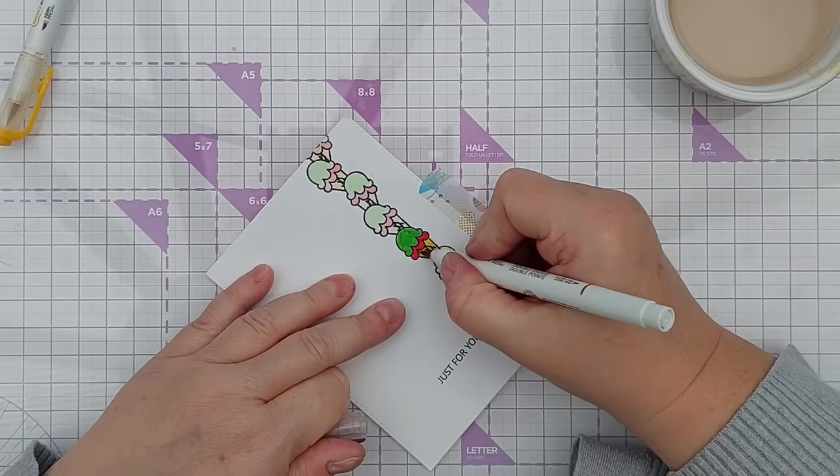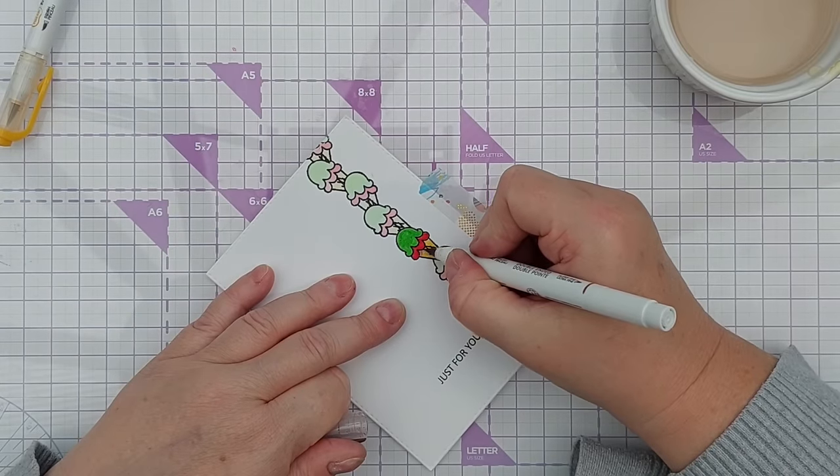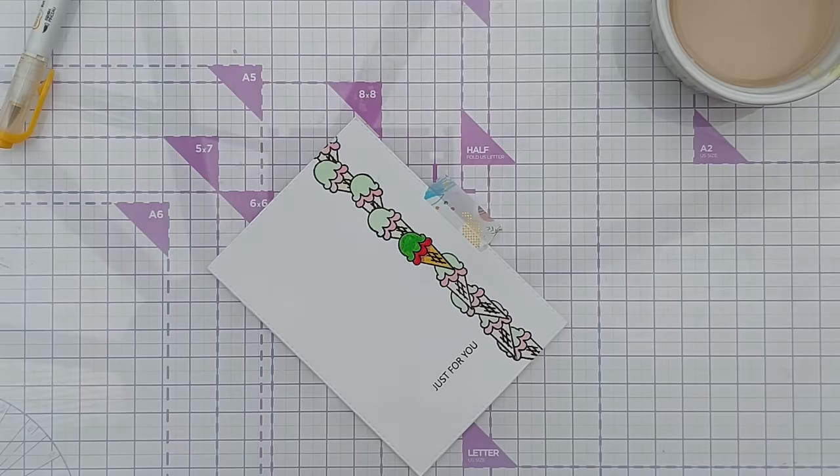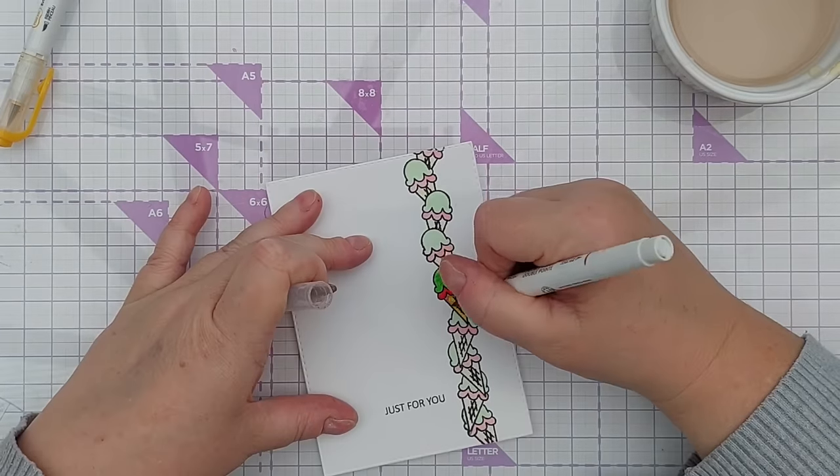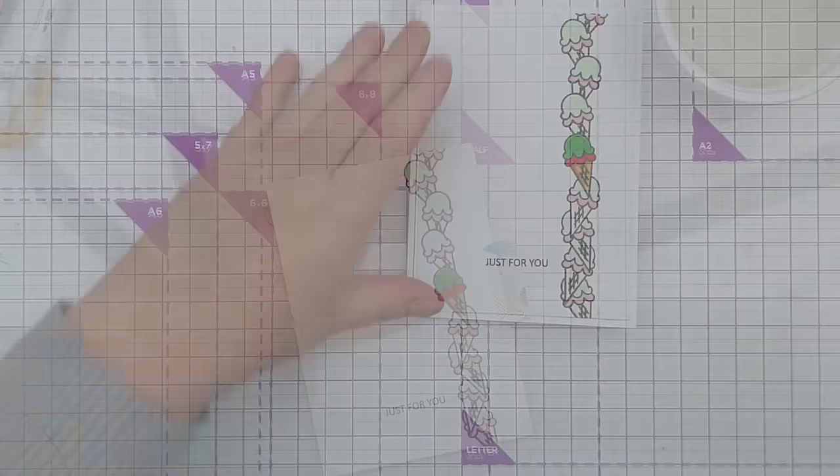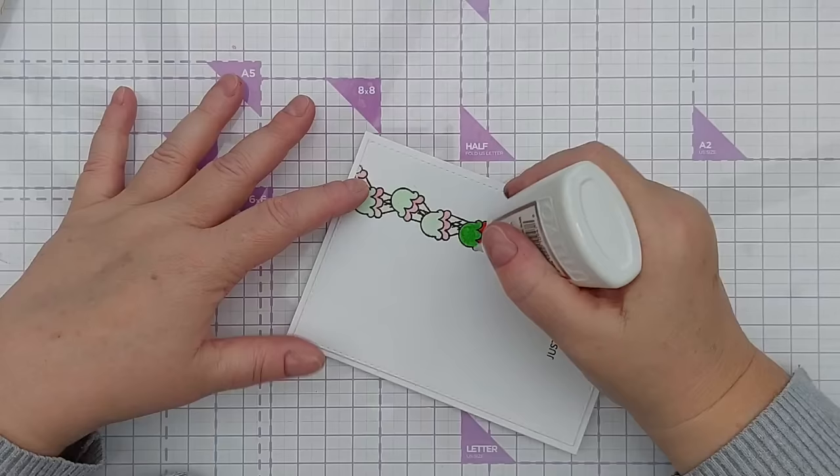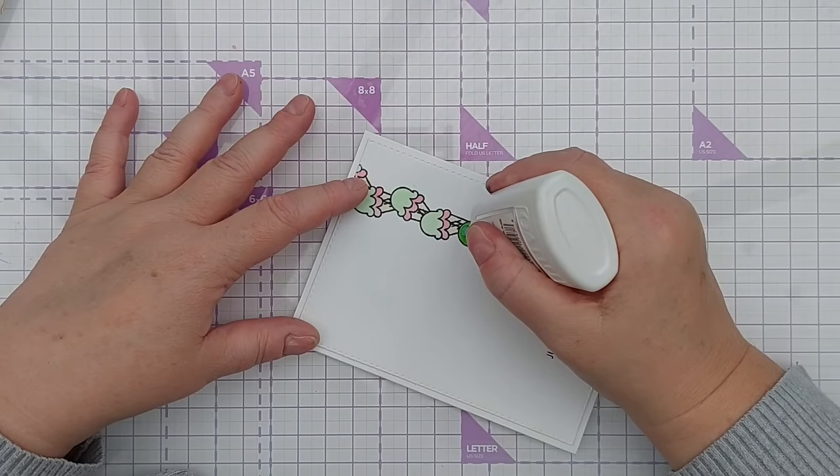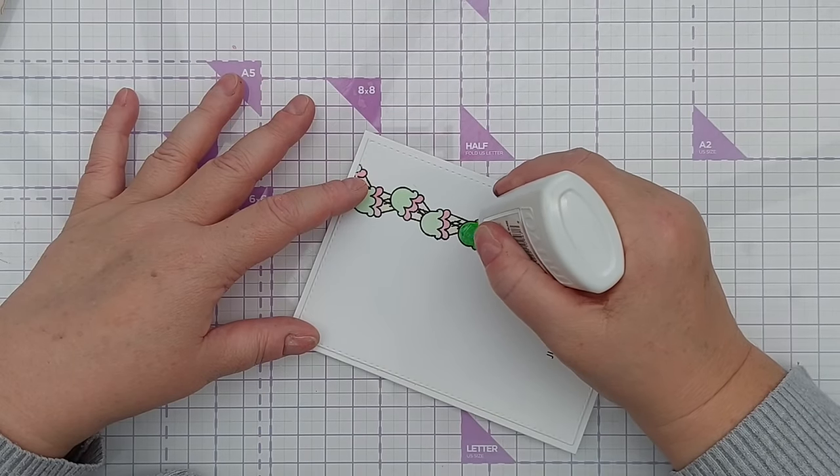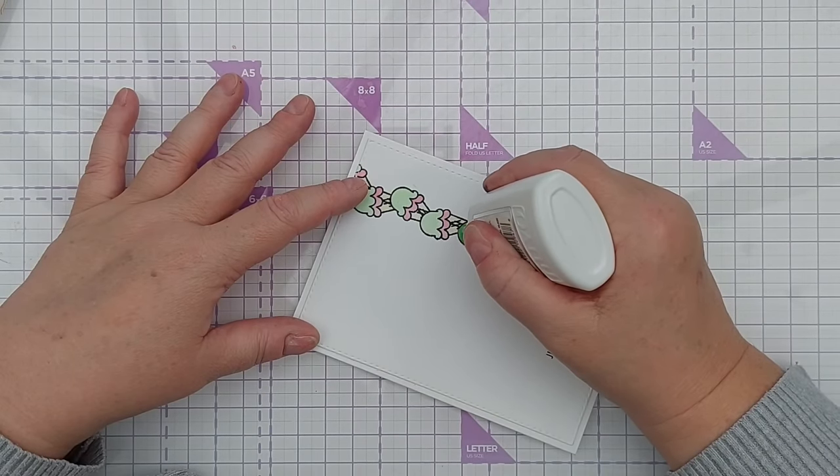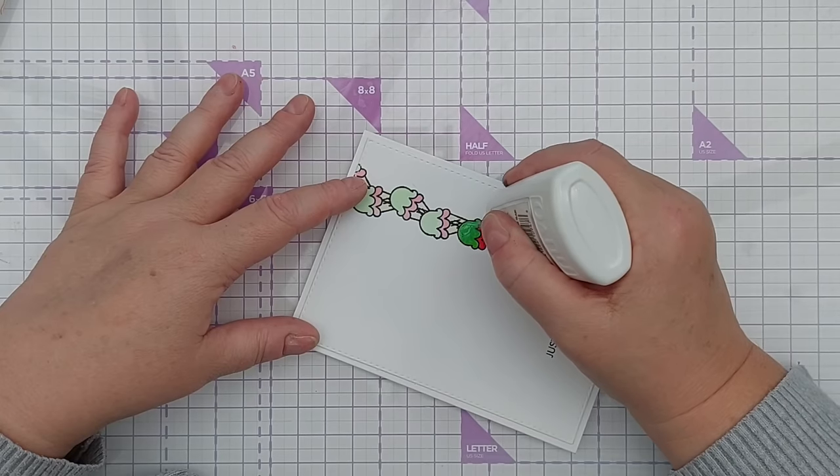I'm just going to give this little bit of cone here a bit of shadow under that ice cream, maybe down one side a bit. With this one, just to give it a little bit of something extra, I'm going to cover the ice cream portion in crystal glaze. You could use glossy accents or one of the Nouveau drops for this.